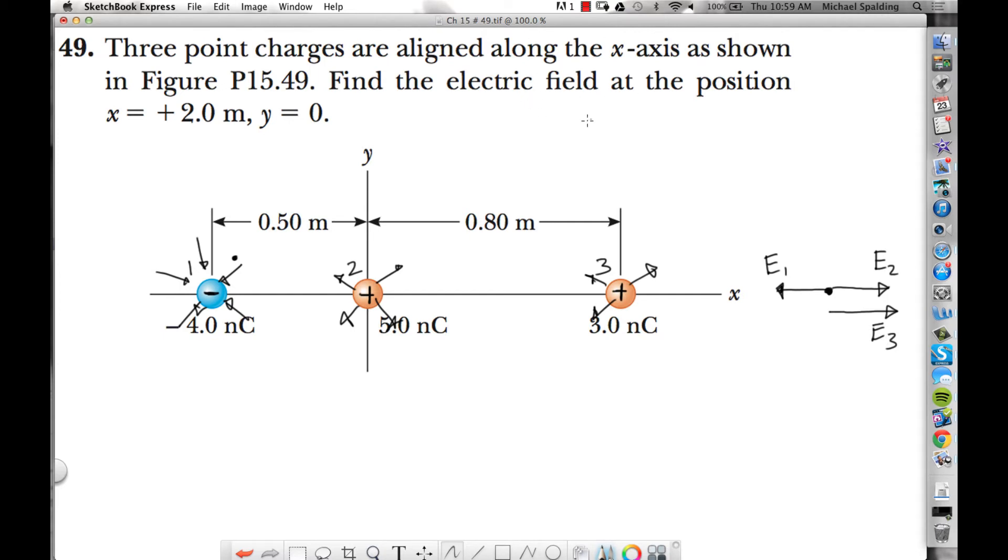Now, what's the equation for finding electric field at a distance from a charge? E equals KQ over R squared. So what we have to do is find each one of these electric fields separately. We've got to find E1, E2, E3. So we're basically using this equation. K is 9 times 10 to the 9th newton meter squared over Coulomb squared.